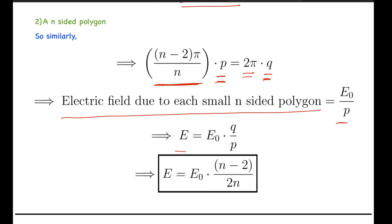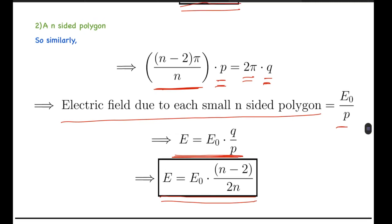So the electric field at the corner will be E₀ times q/p. We can get the ratio of q/p from this equation here. Substituting it, finally we get the value of E equals E₀ times (n-2)/(2n). So yeah, that's the general idea. Hope you all like the video. Please like, share, and subscribe. Thank you.